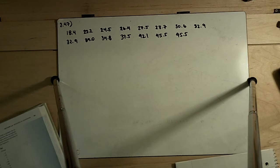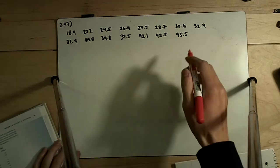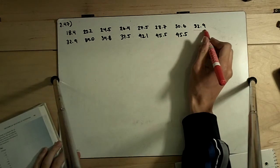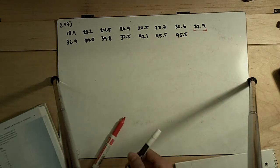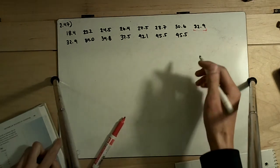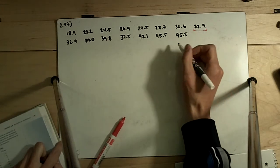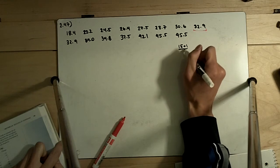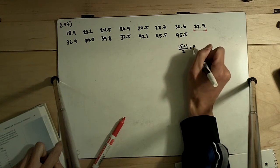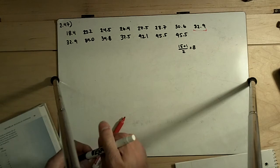It says: determine the quartiles and the interquartile range. To determine the quartiles, we first have to find the median. The median is the middle number. We have 15 numbers, and we do 15 plus 1 divided by 2, which equals 8. So the eighth number in our list is going to be our median.